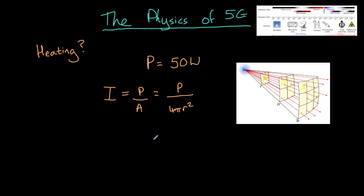So if we were standing, for example, five meters away from our mast, what intensity would we experience? Well, the power of our mast, remember, is just 50 watts. Divide that by four pi times five squared. Five is our distance. And that gives you an intensity of 0.16 watts per square meter.